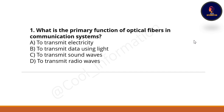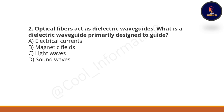Without wasting any time, let's proceed with the first question: What is the primary function of optical fiber in a communication system? Option A: to transmit electricity. Option B: to transmit data using light. Option C: to transmit sound waves. Option D: to transmit radio waves. The correct option is B — to transmit data using light.